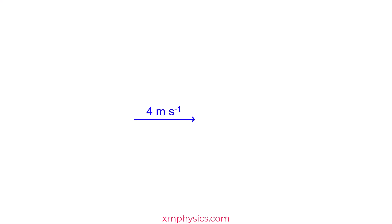Hello. Suppose you are running rightward at 4 meters per second, and then you switch direction and are running leftward at 4 meters per second. What's the change in your velocity? If you think the answer is zero, then you are wrong. The change in your velocity is actually 8 meters per second leftward. Welcome to the world of vector subtraction.